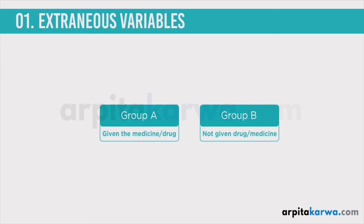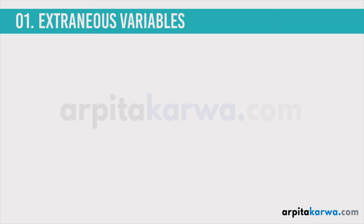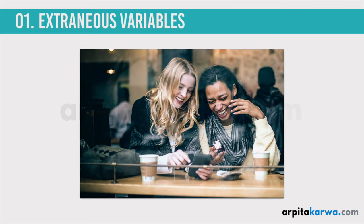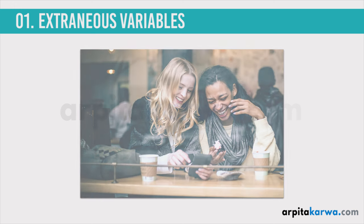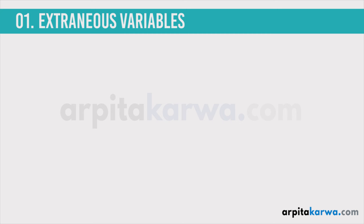So drug is basically a medicine. Group A was given a particular medicine that, according to Aditi, would help cure depression, and group B was not given any medicine. She carries out this experiment. Now, that sounds pretty straightforward at first — all Aditi has to do is give her drug to a bunch of depressed people, and if they feel better, she will prove her point. Well, it might not be so simple. There are a lot of things that could cause people to be less depressed. What if the people Aditi gives the drug to start to feel better for some reason other than the fact that they got the drug?